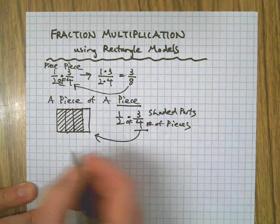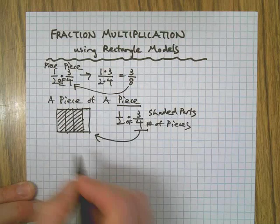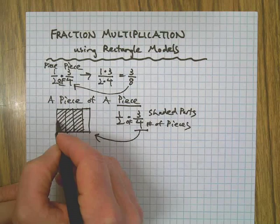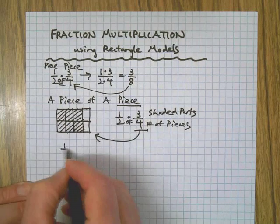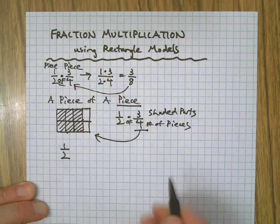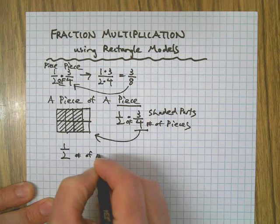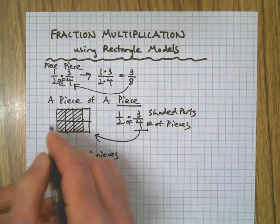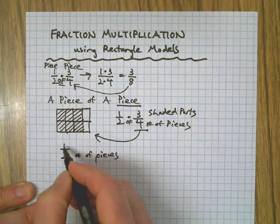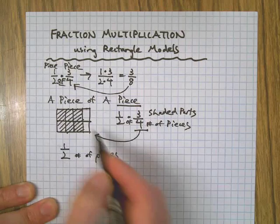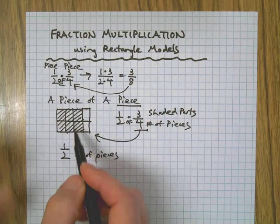Now we need to take half of that piece. So in step two, we're just going to cut that whole thing in half. So we're a number of pieces again, this time we're going horizontal.